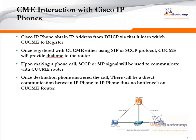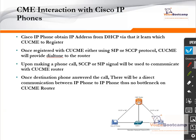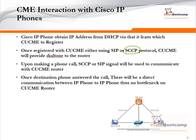CUCME or Cisco Unified Communication Manager interacts with Cisco IP phones using either SIP or Skinny protocol, also known as SCCP. SIP is a more standard protocol, while Skinny is a proprietary protocol developed by Cisco for only Cisco phones. The router itself can act as a PBX, providing a dial tone to phones as soon as they are connected and registered, depending on the IOS image being used.